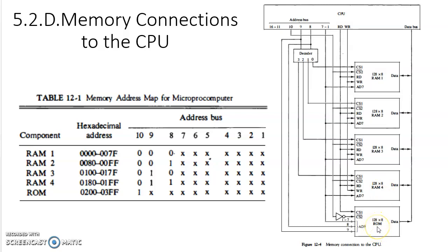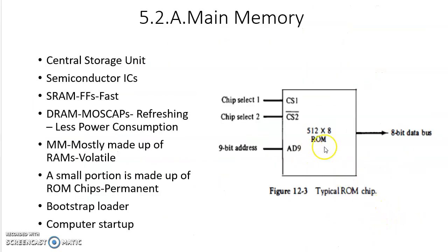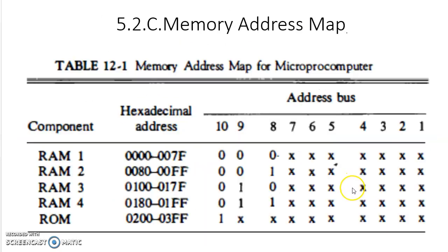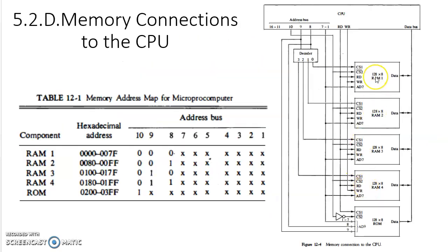The other RAM chip is 512. It should be 512 by 8, which we had seen in the previous slide, 512 by 8. 4 chips of 128 by 8 and 1 of 512 by 8, total 1024 by 8, which is 1 KB.